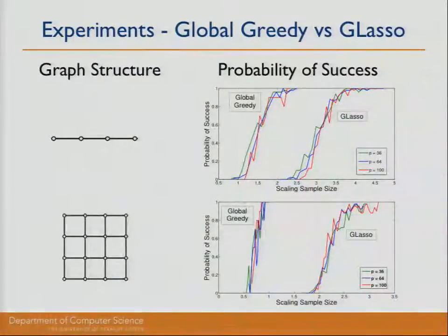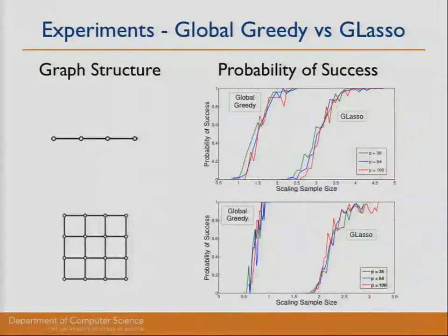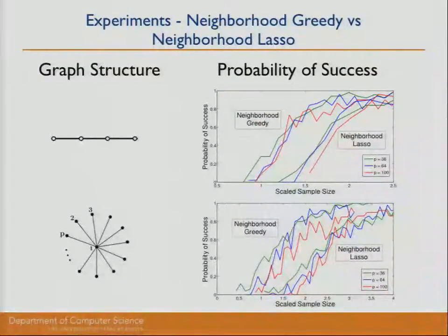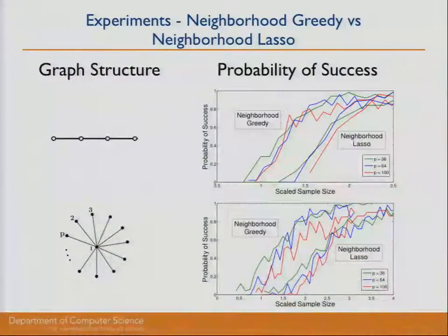For global greedy versus G lasso: across graph structures, with sample size on the x-axis and probability of learning the true model on the y-axis, global greedy requires fewer samples to learn the full model than G lasso, as expected. The same holds for the grid case. For neighborhood greedy versus neighborhood lasso, it's a closer battle since their sample complexities are the same order — but even so, neighborhood greedy outperformed neighborhood lasso, requiring fewer samples in both the chain and star cases.